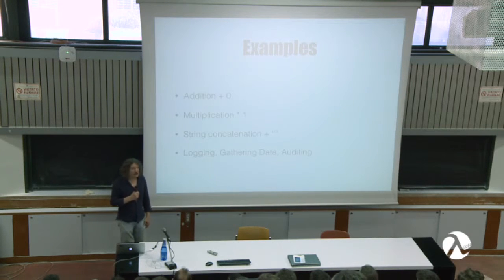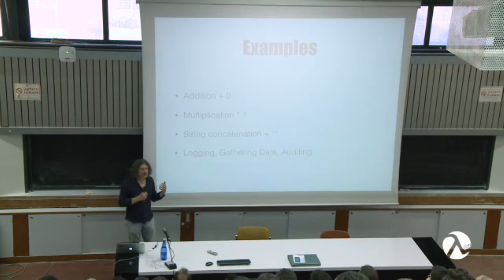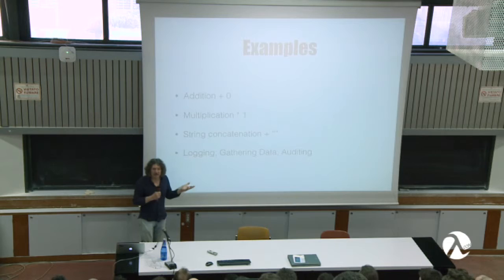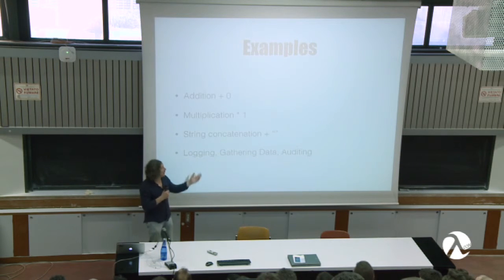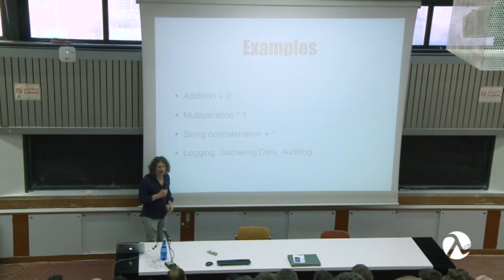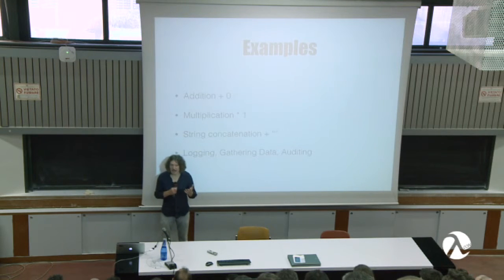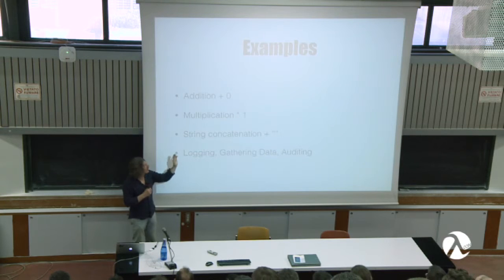The example of a monoid is numbers — natural numbers with addition. The identity arrow is adding zero. Each arrow corresponds to adding something: an arrow for adding five, an arrow for adding six, and their composition is an arrow for adding eleven. There is a multiplication monoid where multiplication by a number is the arrow and multiplication by one is the identity. And then there is string concatenation — also very useful in programming. The identity is an empty string: you concatenate an empty string to something, you get back the same string.